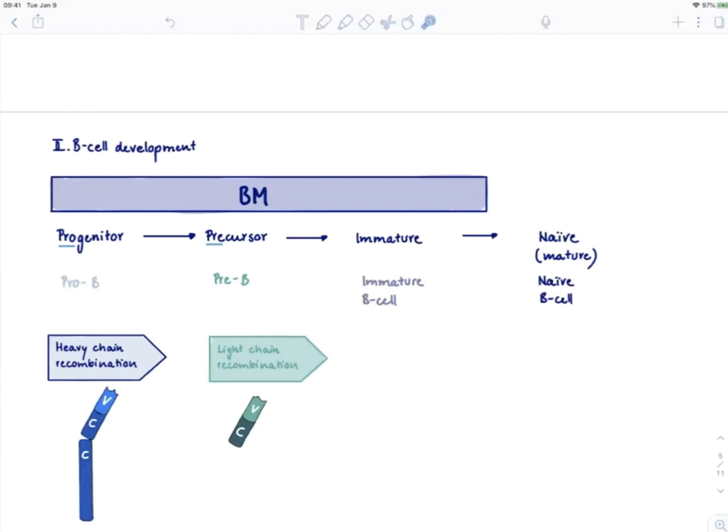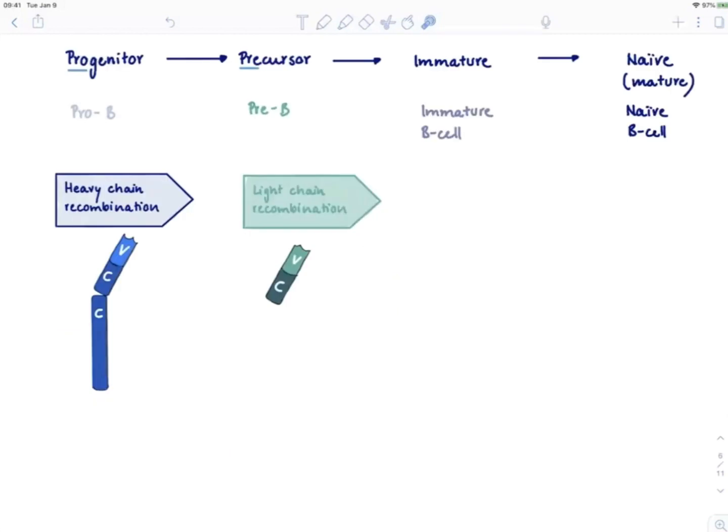How are we going to make the B cell receptor? We'll start with the heavy chain. The heavy chain consists of a constant domain which is always the same, and the variable region.